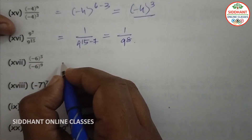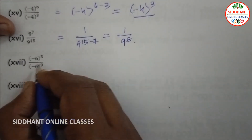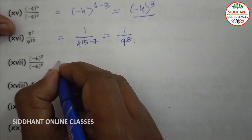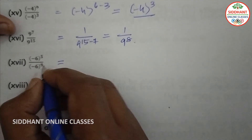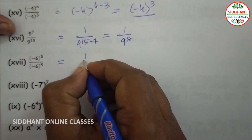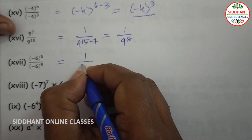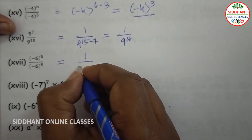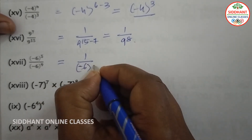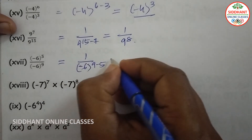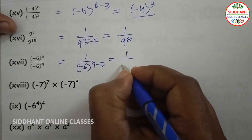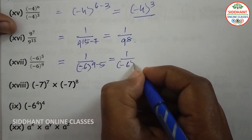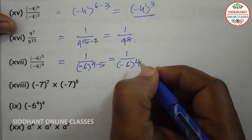Seventeenth one: (-6) to the power of 5 divided by (-6) to the power of 9. Here the denominator power is more, so we write 1 divided by (-6) to the power of 9 minus 5, that will be 1 divided by (-6) to the power of 4.